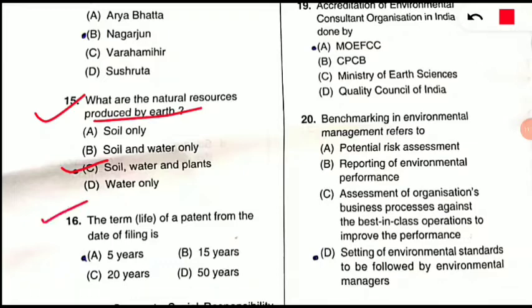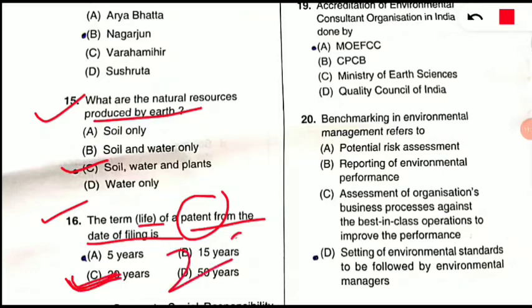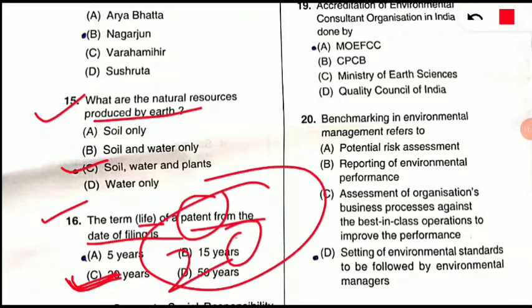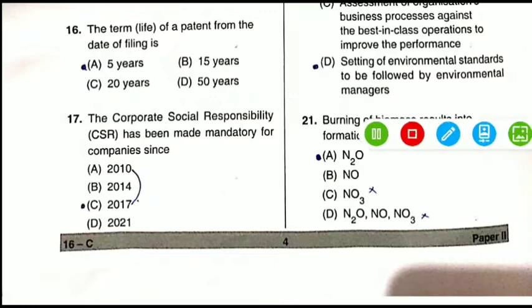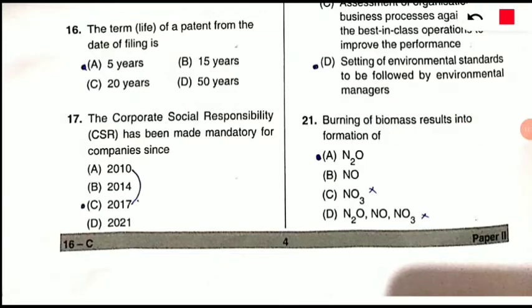Question 16: The term life of a patent from the date of filing is what? The patent lifetime is 20 years — option C is correct. Not five years, as some may be confused — it will be 20 years from the date of filing any patent.